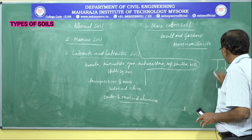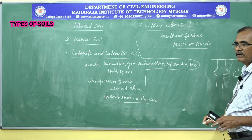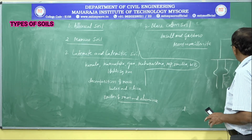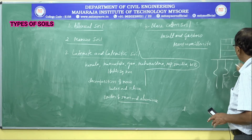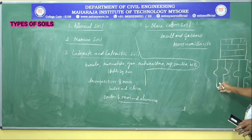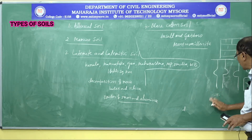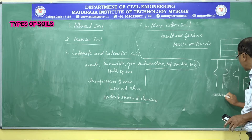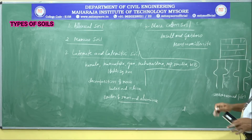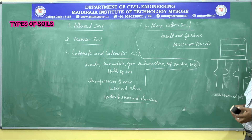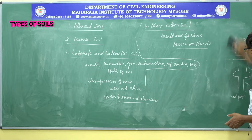Under-reamed piles consist of a bulb-shaped structure. Though the bulbs and structures are surrounded by black cotton soil, even after constructing the structure, the soil has nothing to do with the movement of the structure, because the entire load is taken care of by the piles — called under-reamed piles. These under-reamed piles are suitable for lightly loaded structures intended to be constructed on black cotton soils.